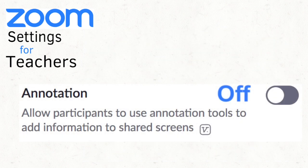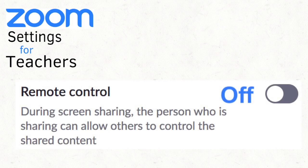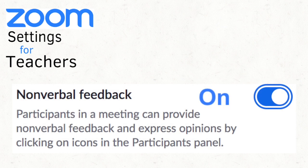If you're new to Zoom, I suggest turning the Annotation feature off. I also recommend turning the Whiteboard feature off, especially if you're new to Zoom. Turn off the Remote Control feature. Turn on the Nonverbal Feedback feature. This allows participants to raise their hand virtually, or give you a virtual thumbs up, and even request that you slow down or speed up.